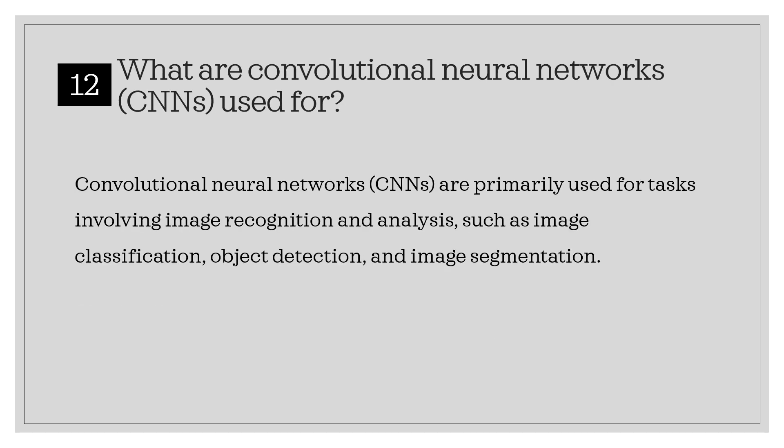What are convolutional neural networks used for? Convolutional neural networks, or CNNs, are primarily used for tasks involving image recognition and analysis, such as image classification, object detection, and image segmentation.